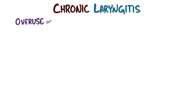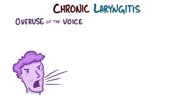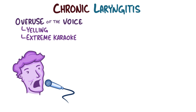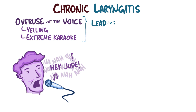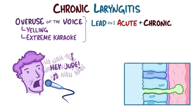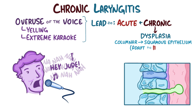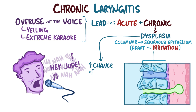Finally, there's overuse of the voice, like yelling or a really prolonged karaoke session — that could lead to both acute and chronic laryngitis. In chronic laryngitis, the normal columnar cells undergo dysplasia, which is when they transform into squamous epithelium to adapt to the chronic irritation. This dysplasia increases the chance that these cells might eventually develop into laryngeal cancer.